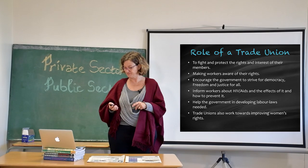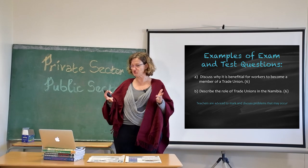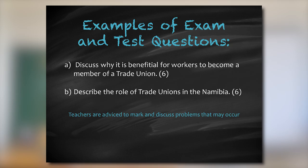Homework: list the aims of trade unions for six points, and describe under what conditions a trade union can fight for better wages for its members. Example exam and test questions: discuss the benefits for a worker of becoming a member of a trade union — that is worth six points. Also describe the role that trade unions play in Namibia and why it is important that trade unions exist.